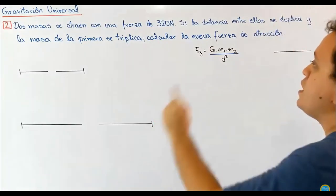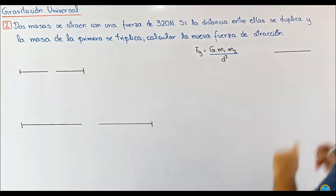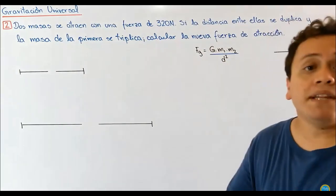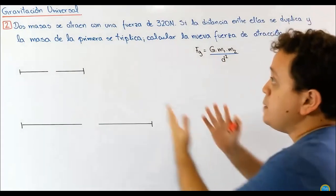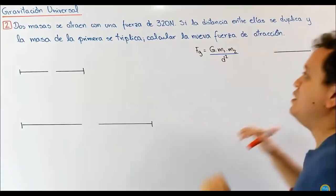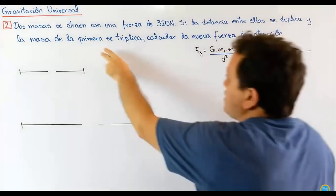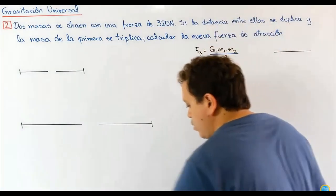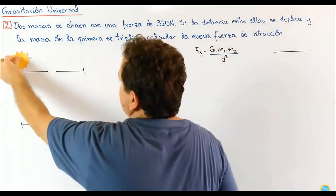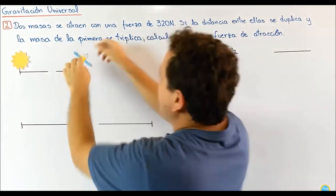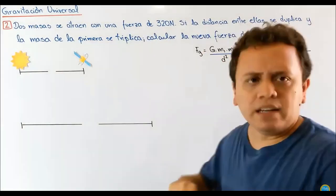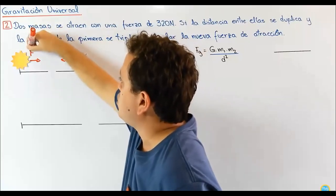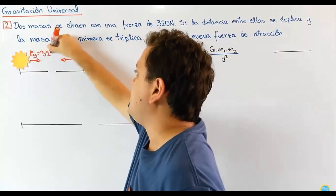El problema número 2 dice: dos masas se atraen con una fuerza de 320 N. Si la distancia entre ellas se duplica y la masa de la primera se triplica, calcular la nueva fuerza de atracción. Este problema tiene dos partes. Primera parte: dos masas se atraen con una fuerza de 320 N. Segunda parte: si la distancia se duplica y la masa de la primera se triplica, calcular la nueva fuerza. Empezamos con nuestro gráfico: tengo dos masas, la primera es una estrella y la segunda un satélite. Estas dos masas se atraen con una fuerza de gravitación de 320 N, el mismo valor para los dos cuerpos dado que la fuerza es mutua.